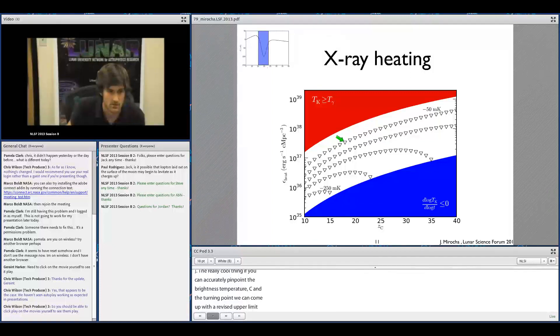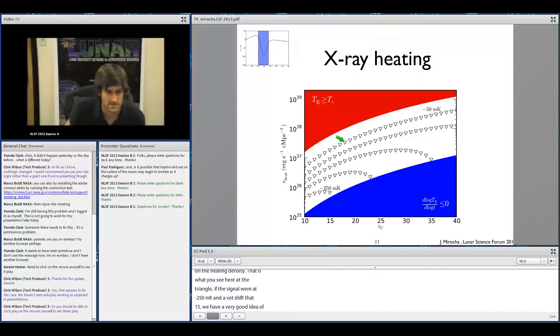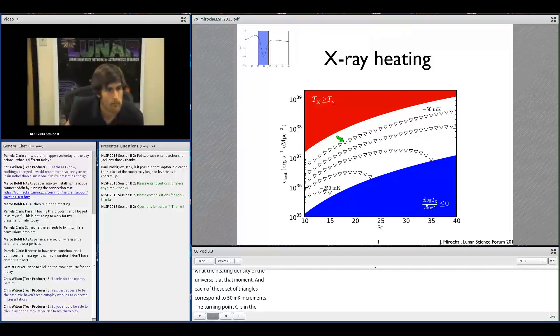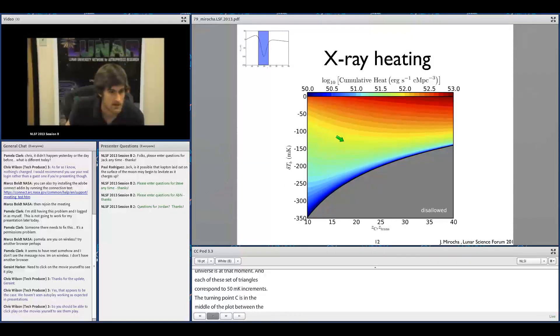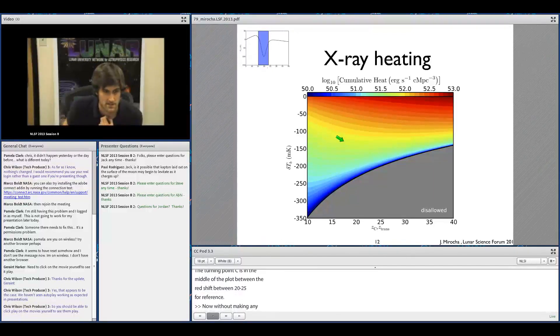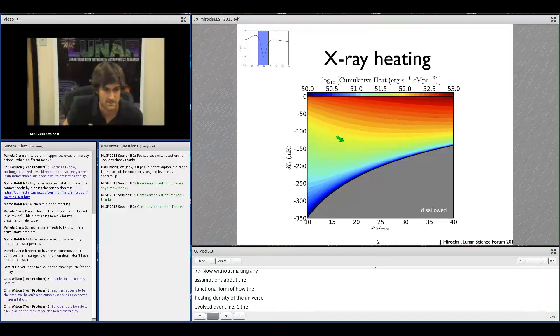The really cool thing is if we're able to accurately pinpoint the brightness temperature of turning point C, we can come up with a revised upper limit on the heating rate density. That's what you're seeing here with these triangles - if the signal were measured at minus 250 millikelvin and a redshift of 15, we'd have a very good idea of what the heating rate density of the universe is at that moment. Each of these sets of triangles correspond to 50 millikelvin increments. Our fiducial models put turning point C almost right in the middle of this plot between redshift of 20 and 25.